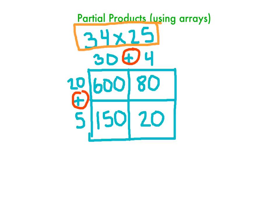So what we want to do next, or for the final step, is we're going to take those partial products and we're going to add them up. So I'm going to pull out that 600, the 150, the 80, and the 20.